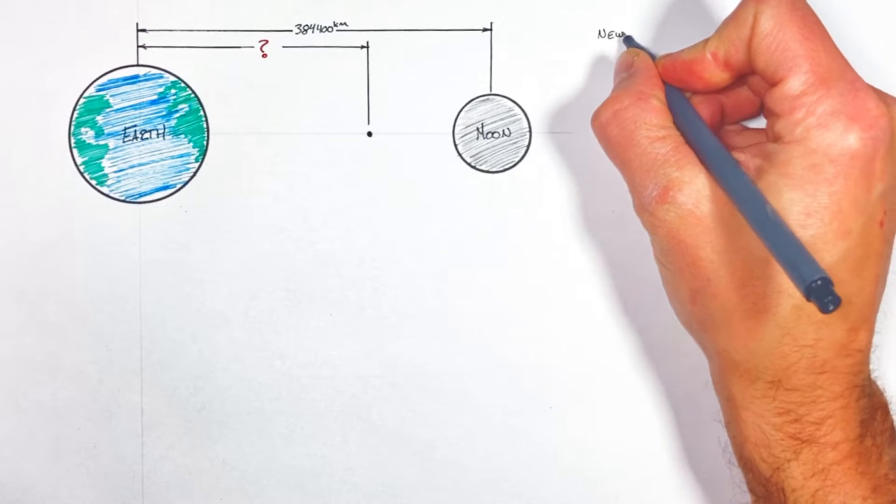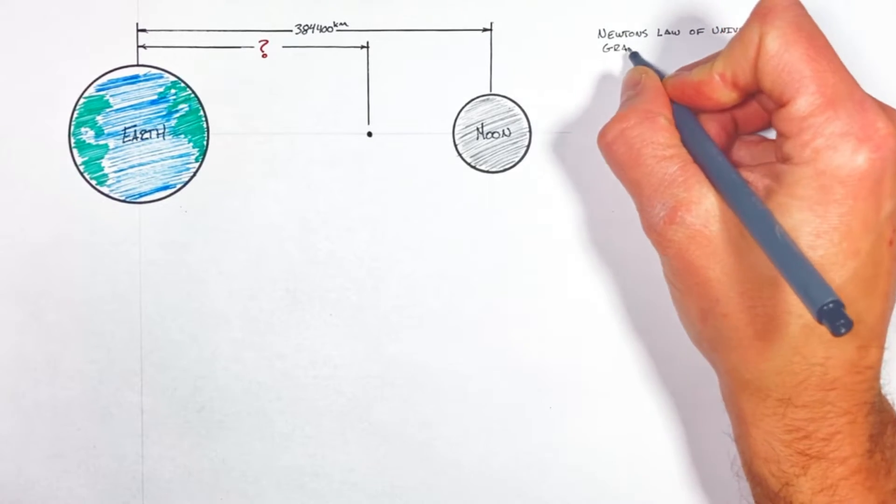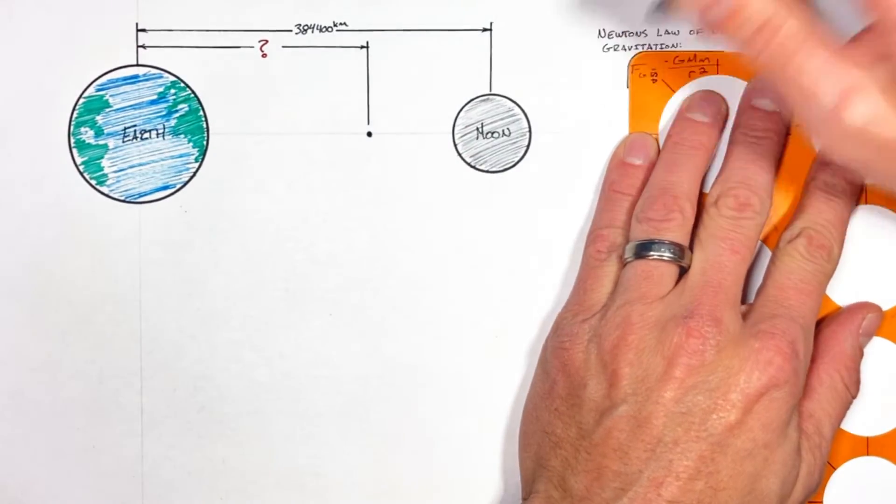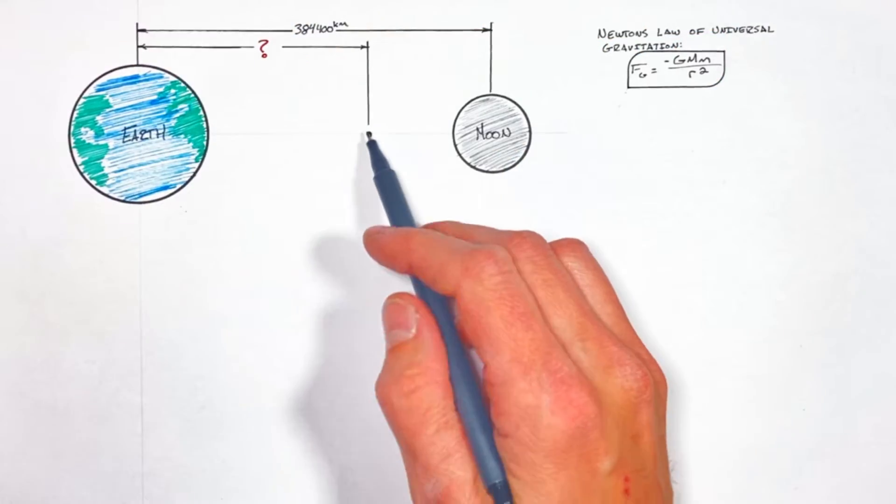You see, according to Newton's law of universal gravitation, the force by gravity between two masses is inversely proportional to the distance between them.